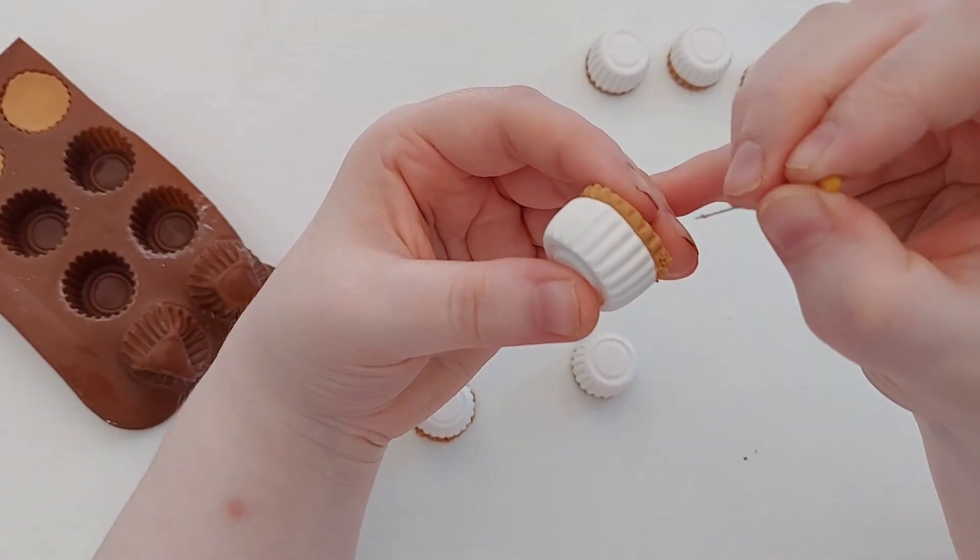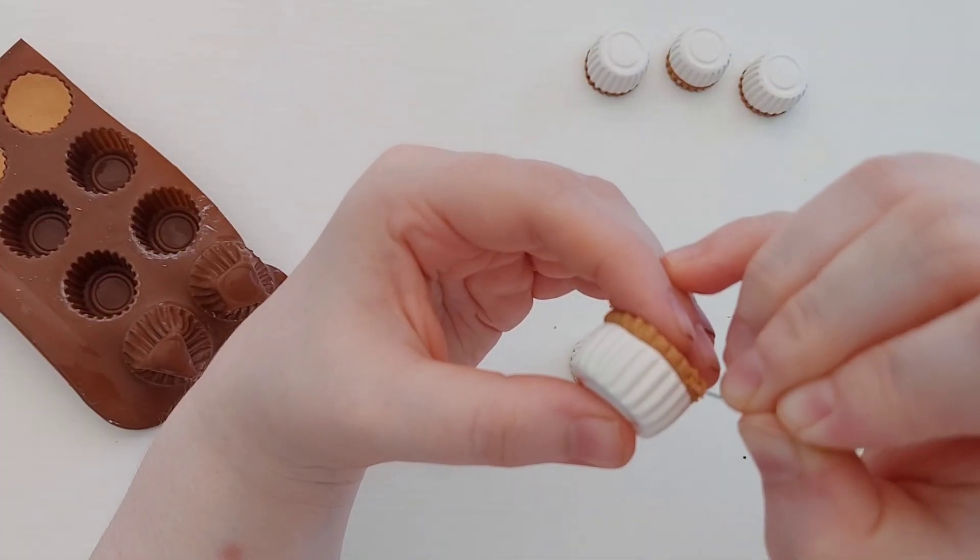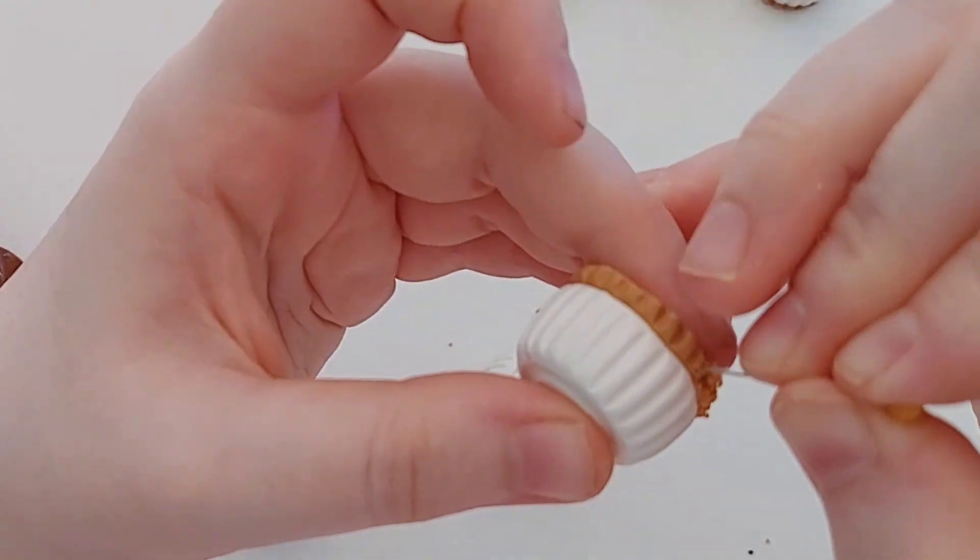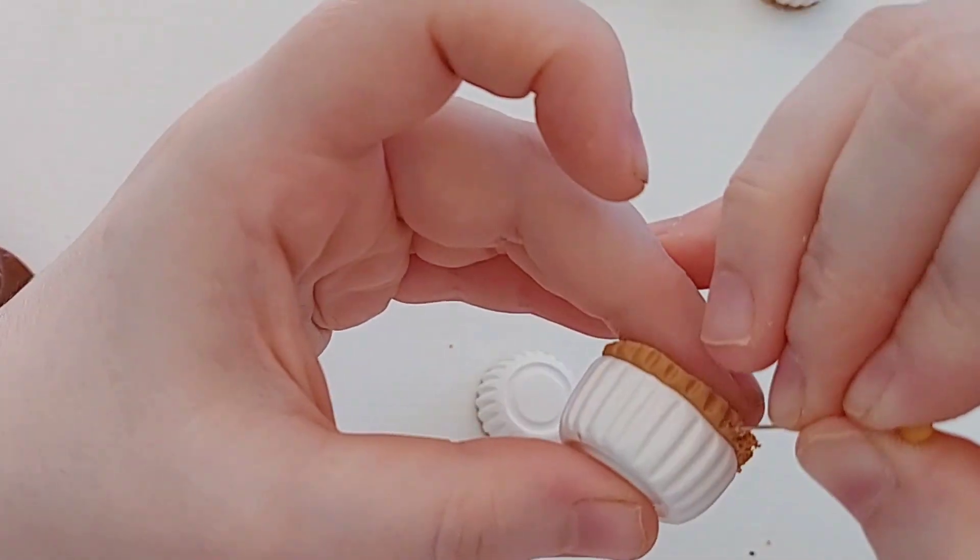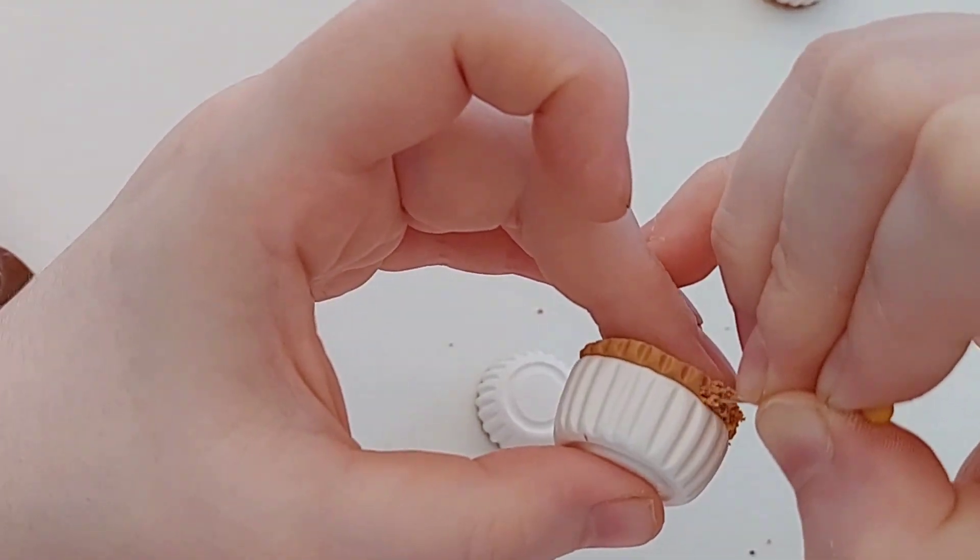For the crust of the cheesecake, you're just going to take a small needle or a needle tool and you're going to start doing little tiny circles. Now there is a secret to doing this. It's not just making circles and making holes. When you make a hole, you want to make sure that you place little tiny pieces back inside.